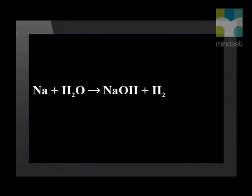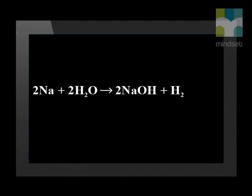We can write this equation as: Na + H₂O → NaOH + H₂. To balance this equation, we place a 2 in front of the Na, and also a 2 in front of the H₂O. Then we put a 2 in front of the sodium hydroxide on the right-hand side.